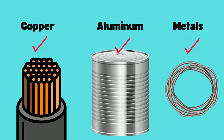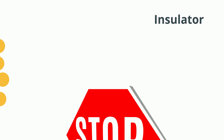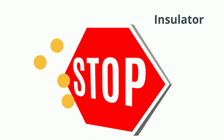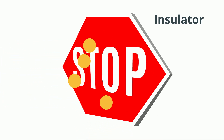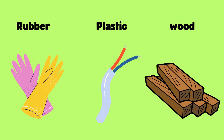An insulator is a material that does not allow electric current to flow through it easily. It has a high resistance to the flow of electric current. Examples include rubber, plastic, and wood.